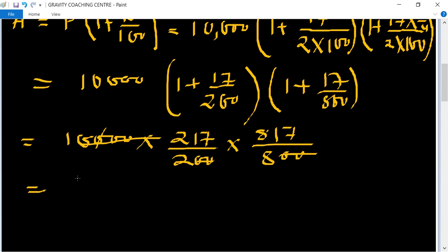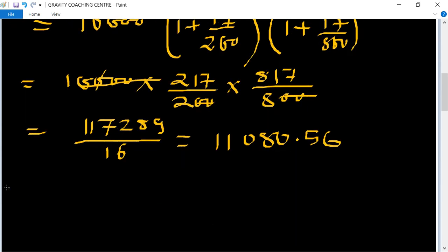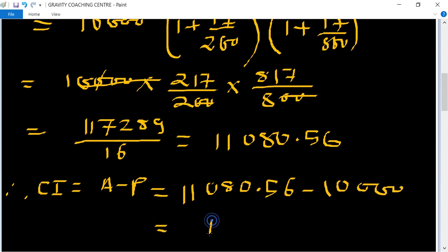After multiplying numerator and denominator, then dividing, the result is Rs 11,080.56, which is the amount. Therefore, compound interest = A - P = 11,080.56 - 10,000 = Rs 1,080.56, which is the required answer.